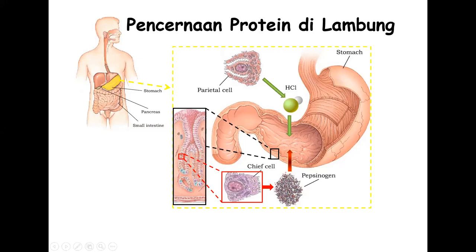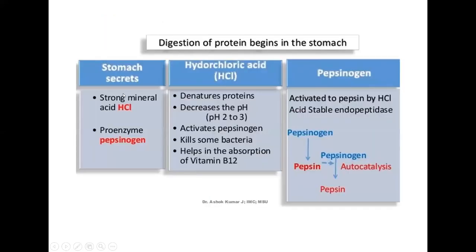Pepsinogen akan diubah menjadi pepsin oleh HCl. Pepsin yang sudah aktif juga bisa mengaktifkan pepsinogen lainnya—disebut autokatalitik. Lambung mempunyai beberapa bagian: fundus, korpus, dan pilorus, dengan otot sirkuler dan longitudinal. Di dalam lambung terjadi pencampuran, denaturasi, pembunuhan kuman, dan membantu penyerapan vitamin serta zat besi. Sekret lambung ada dua: HCl dan pepsinogen. HCl untuk mendenaturasi protein, menurunkan pH, mengaktifkan pepsinogen, membunuh bakteri, dan menolong absorpsi vitamin B12.